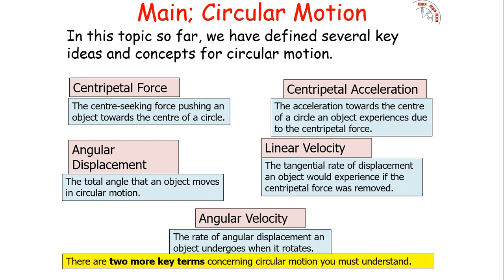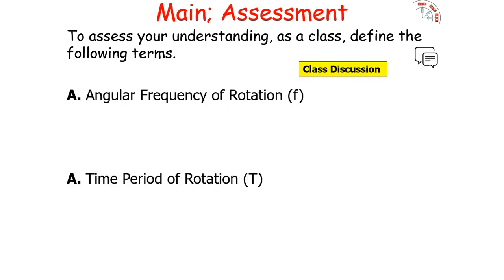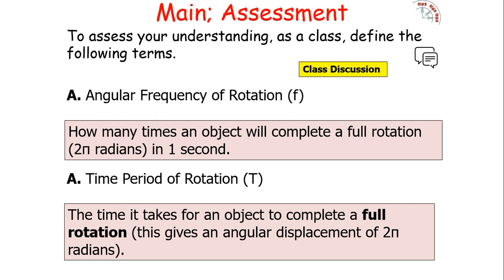There are two more key terms: angular frequency and time period. These definitions are consistent across physics and will be familiar from the waves module. Angular frequency is how many times an object completes a full rotation — an angular displacement of 360 degrees or 2π radians — in one second. The time period is the time it takes for an object to complete one full rotation, giving an angular displacement of 2π radians.